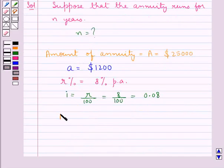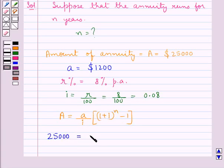Let us now consider the formula capital A equal to small a upon i into 1 plus i to the power of N minus 1 the whole. Where we have to find out the N. So putting the respective values we have 25,000 is equal to 1200 upon 0.08 into 1 plus 0.08 to the power of N minus 1 the whole.